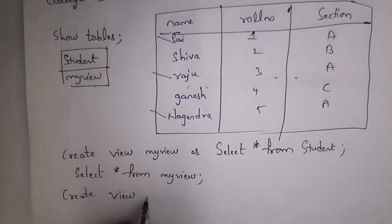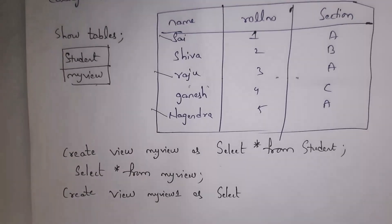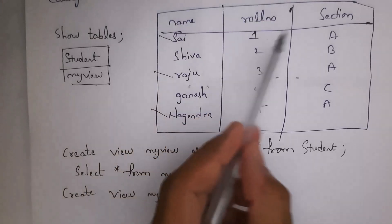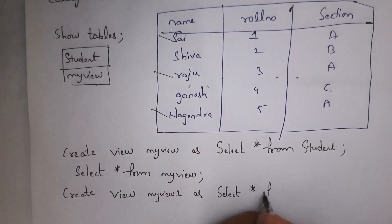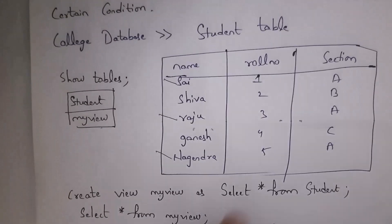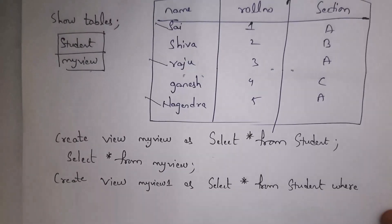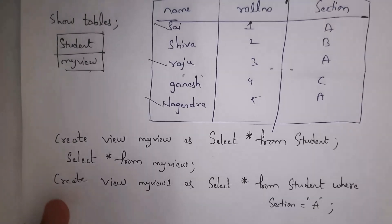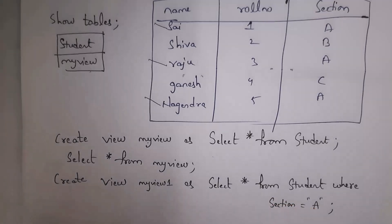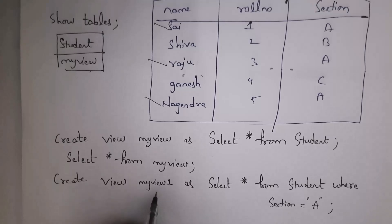Previously I gave the view name as 'my_view'. This time I'll give the view name as 'my_view_1'. So write: CREATE VIEW my_view_1 AS SELECT * — I want all three columns: name, roll number, and section — FROM student WHERE section = 'A'. Whenever you write this line of code and click enter, it will create a view named 'my_view_1'.